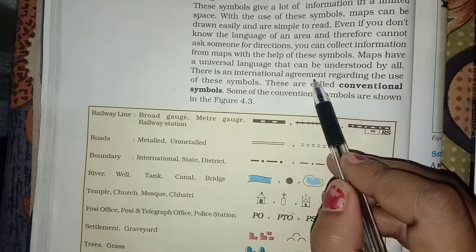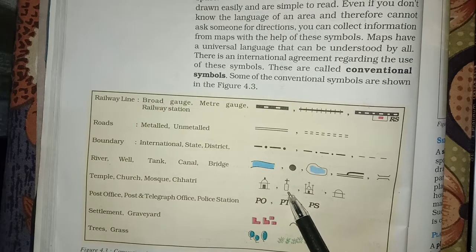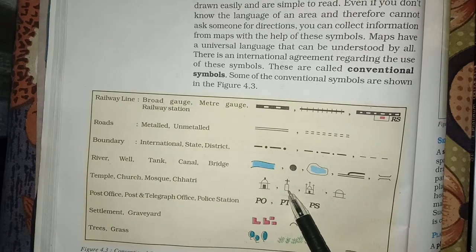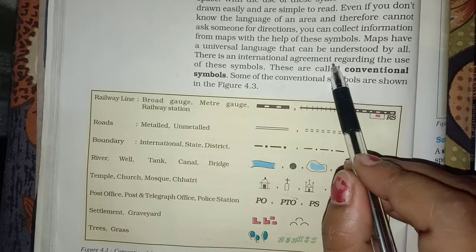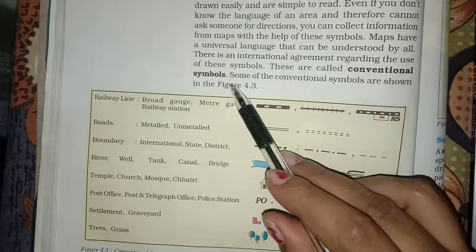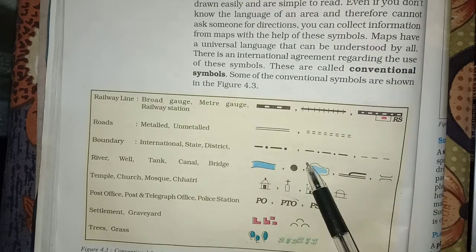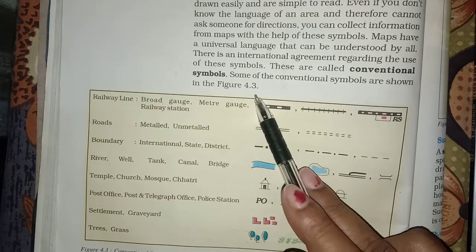International agreement means that if there is any symbol or sign on the map, it can be used at the international level. These are called conventional symbols. Some of the conventional symbols are shown in figure 4.3.